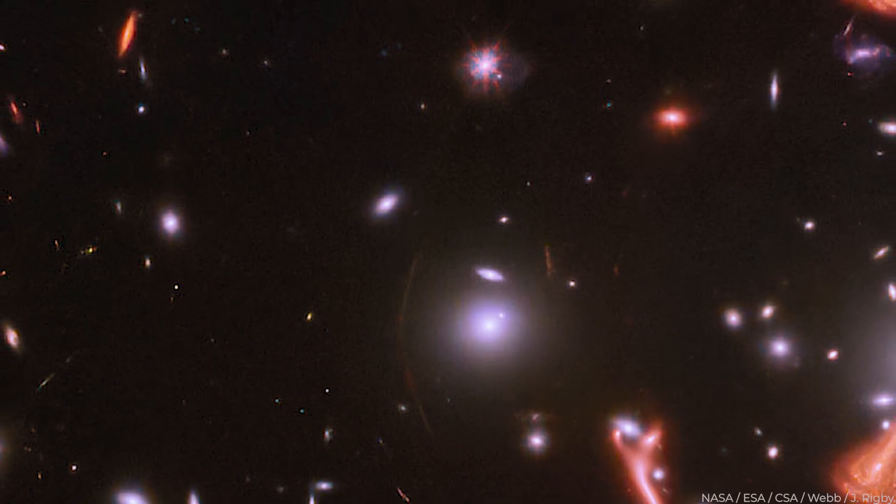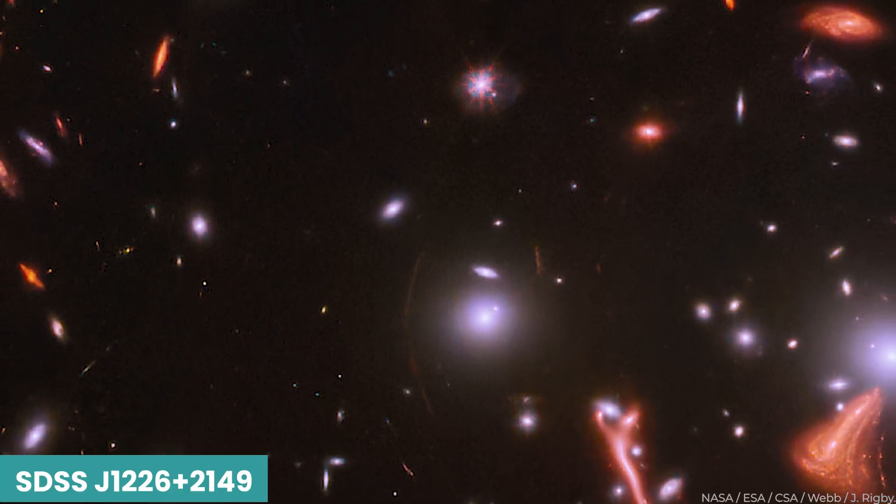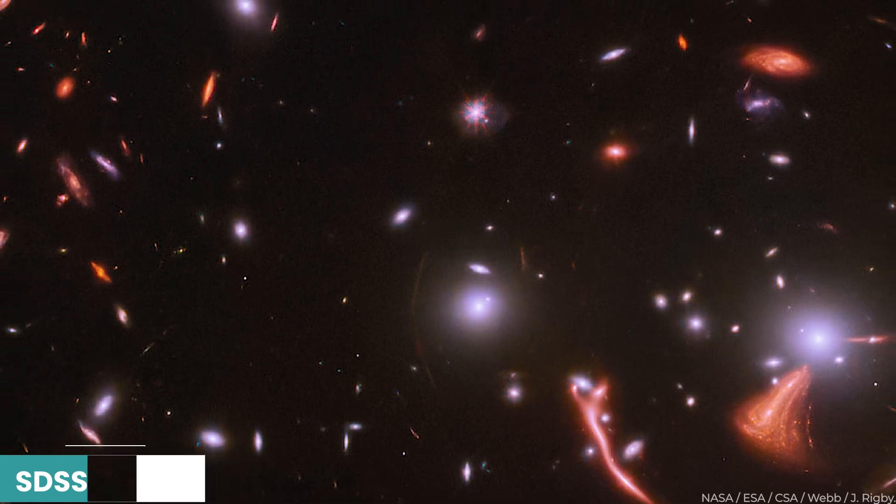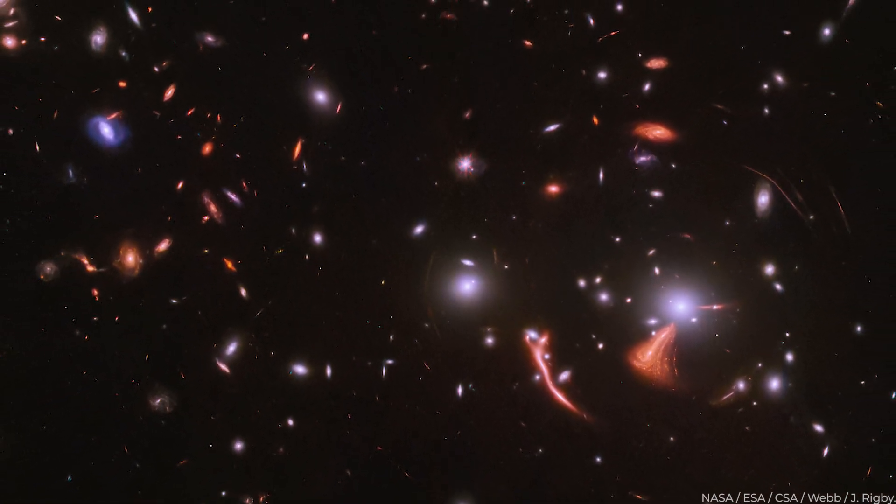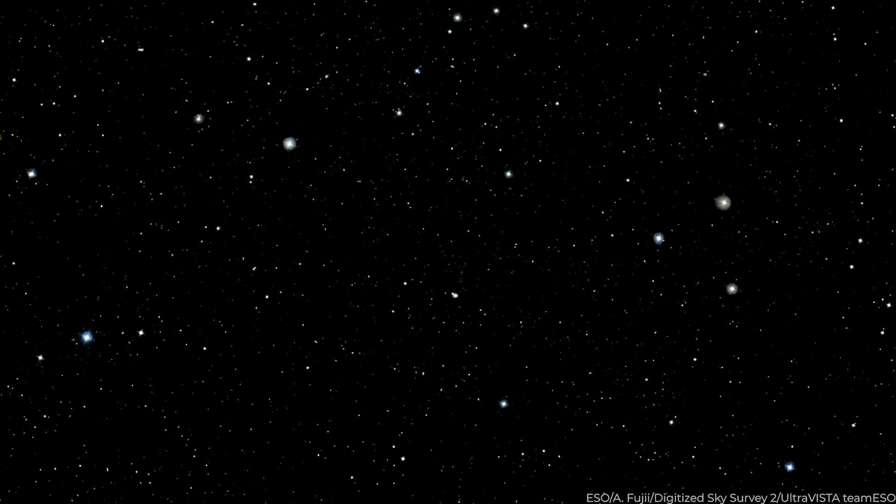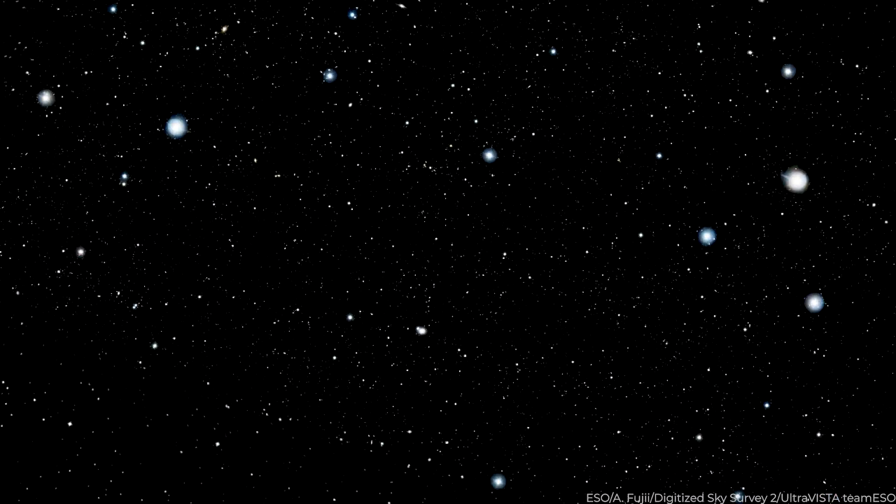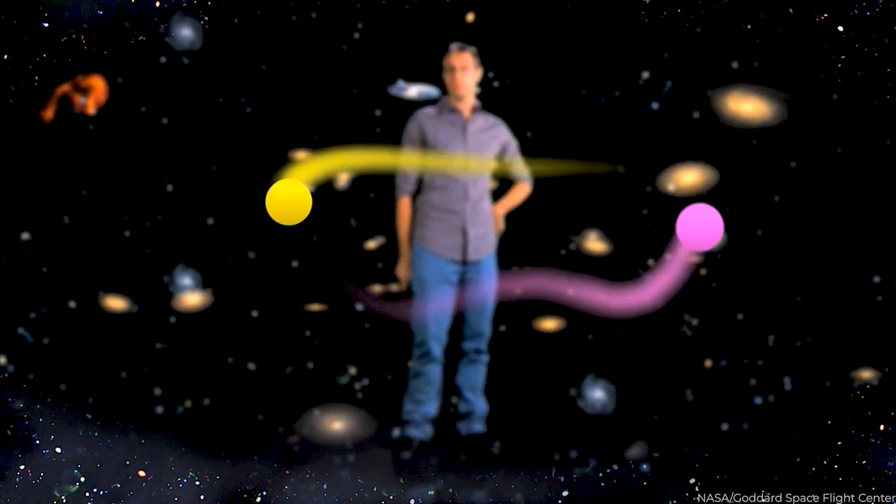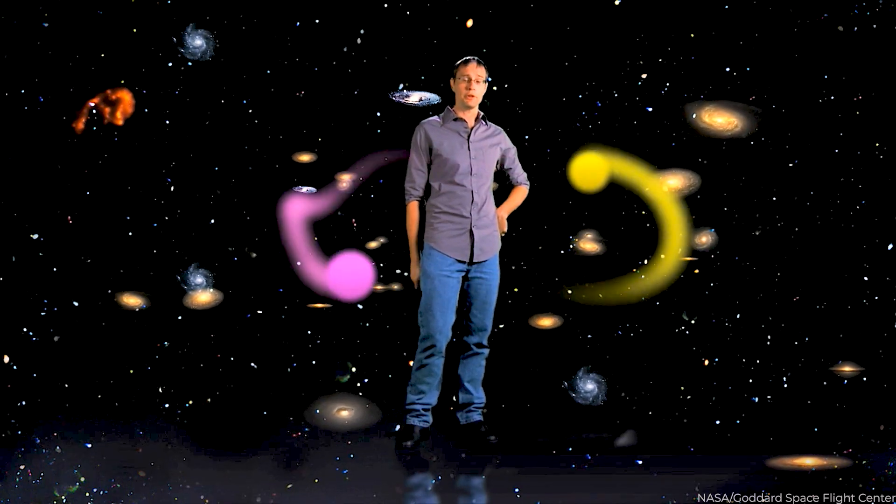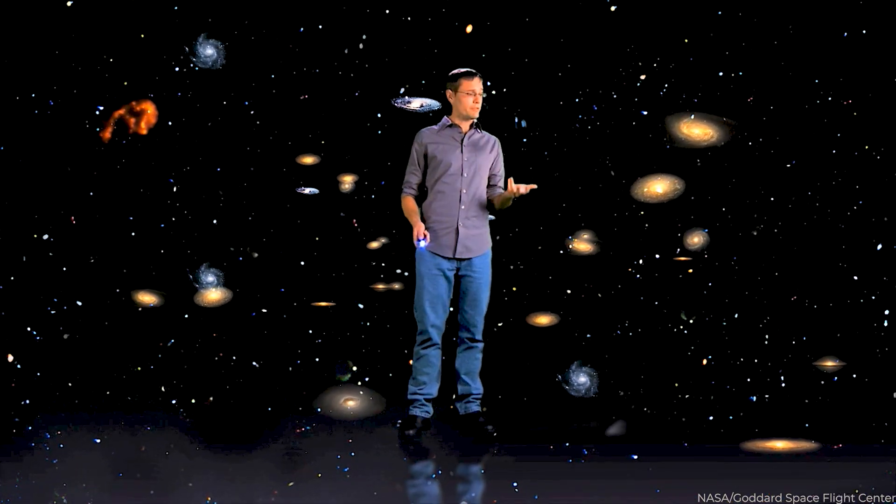This galaxy cluster, SDSS J1226 plus 2149, is so densely packed with stars and planets that it distorts space like a bowling ball on a mattress. The twisted cosmic realm distorted and magnified the enormous things in the distance. Researchers hope to better grasp how space and time interact at cosmic scales by examining these celestial objects and their interactions.